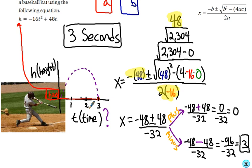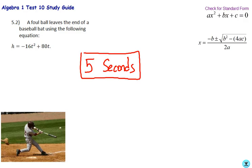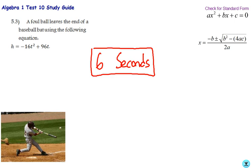Pause and try 5.2 and 5.3 — be careful with all the arithmetic. For 5.2 you should have gotten 5 seconds, and for 5.3, 6 seconds. If you didn't get those, figure out your mistake or ask for help.